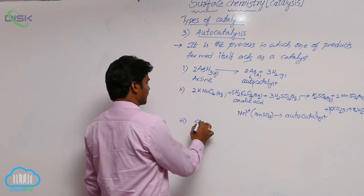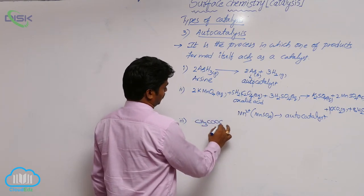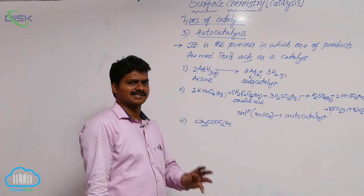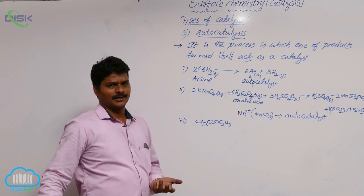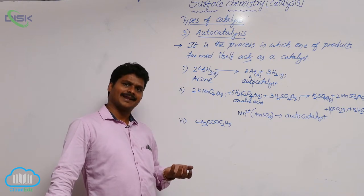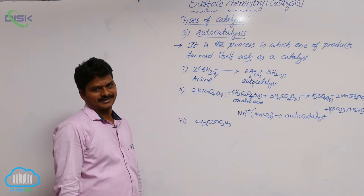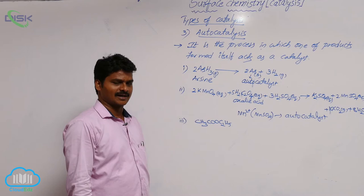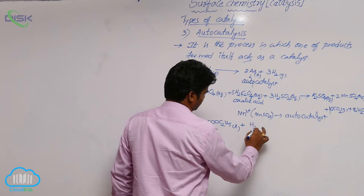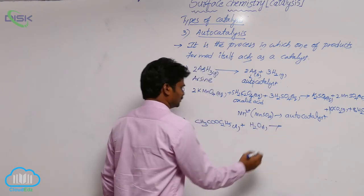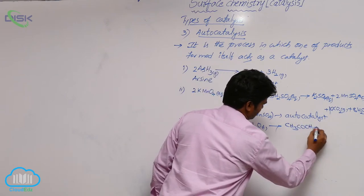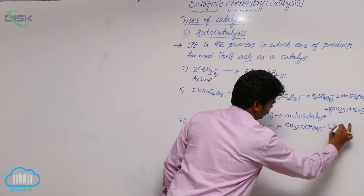One more example: ester hydrolysis. Take CH₃COOC₂H₅. Generally, hydrolysis of an ester is carried out in the presence of an acid or base, which acts as an external catalyst. But we can also carry it out without adding any external catalyst. With H₂O(l), the reaction gives CH₃COOH(aq) plus C₂H₅OH(aq).